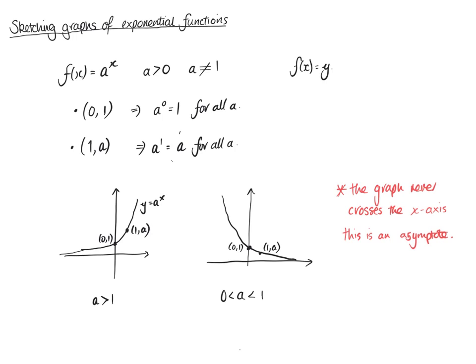I'm going to do a couple of examples of sketching these. They're fairly simple until we start transforming them a little, and then things become a little more complicated — not hugely so, because it's still the same laws and the same rules for moving graphs. They don't change; it just becomes a little more complicated because they're exponential functions.